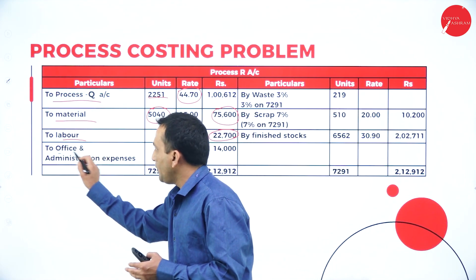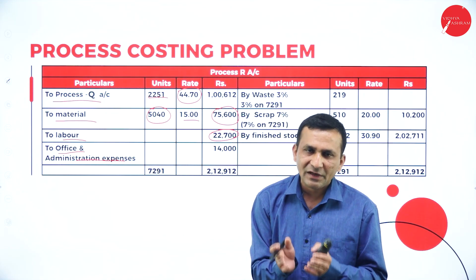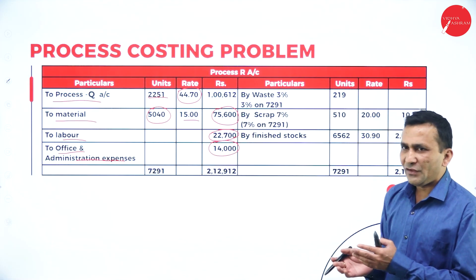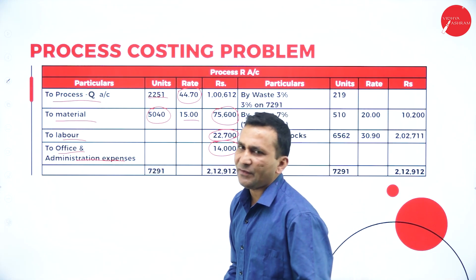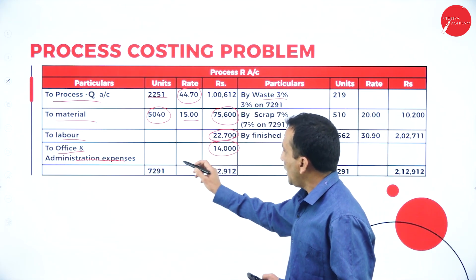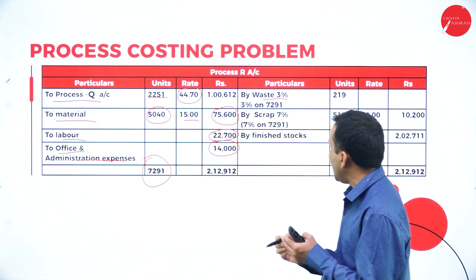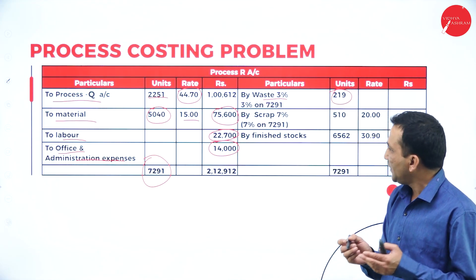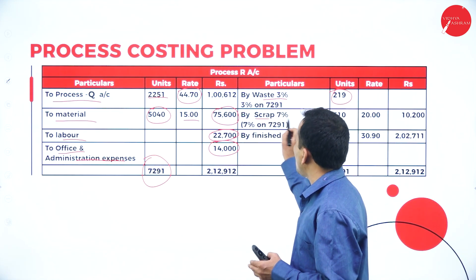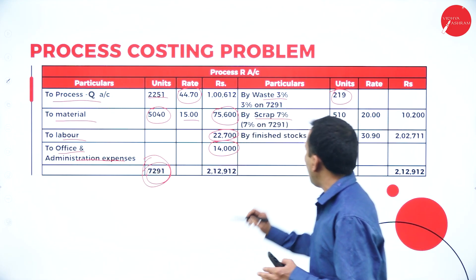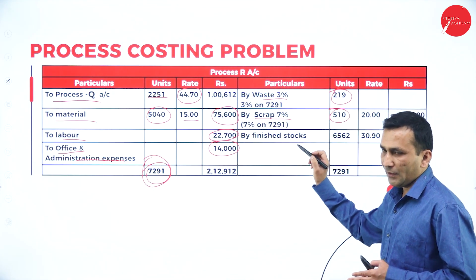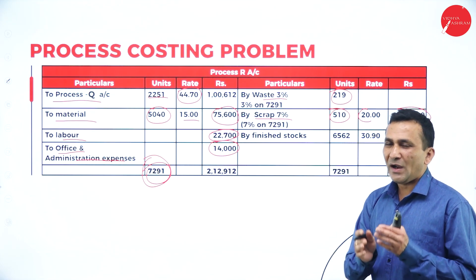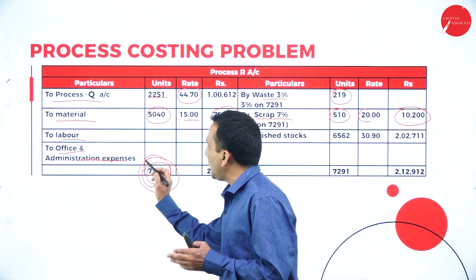The total available input for Process R is 7,291 units. Normal loss is 3 percent: 7,291 × 3% = 219 units. Scrap is 7 percent: 7,291 × 7% = 510 units, at the scrap rate of ₹20 per ton: 510 × ₹20 = ₹10,200 recovered.